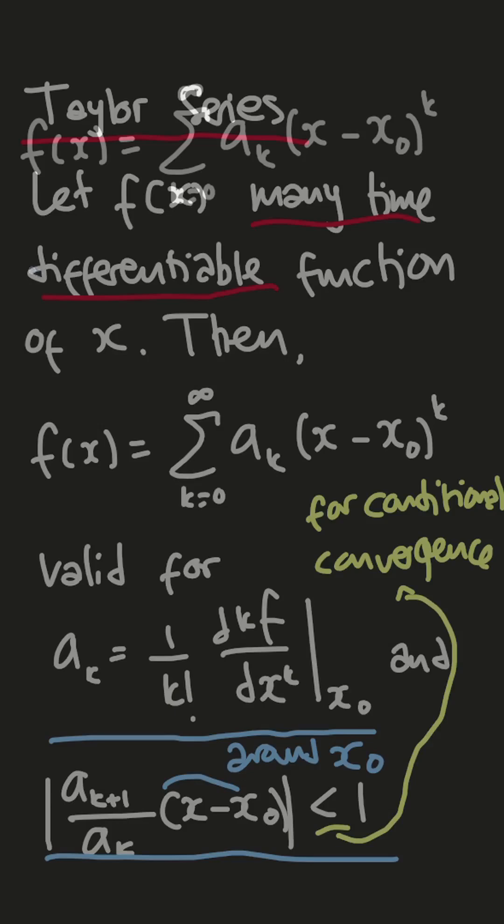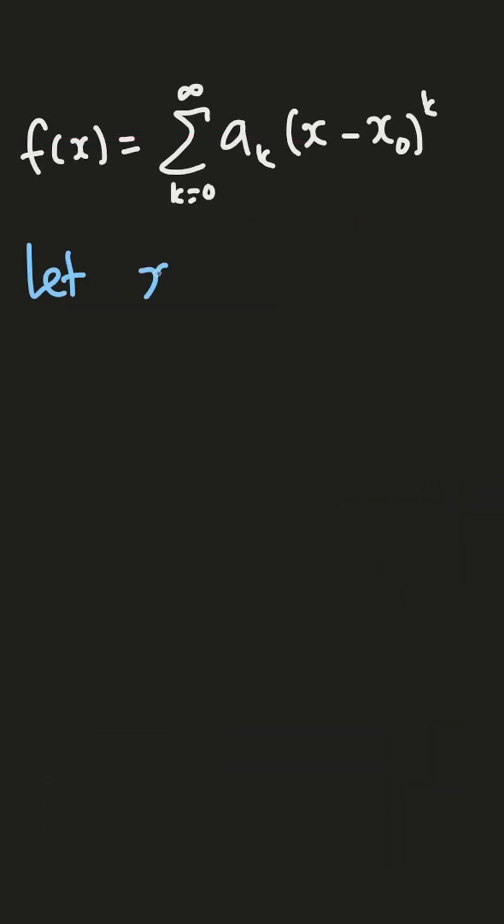So now let x here equal x0 plus epsilon, where epsilon is smaller and smaller than 1 but greater than 0, which is an infinitesimal value of epsilon. So by this infinitesimal, I can rewrite the expansion as this,